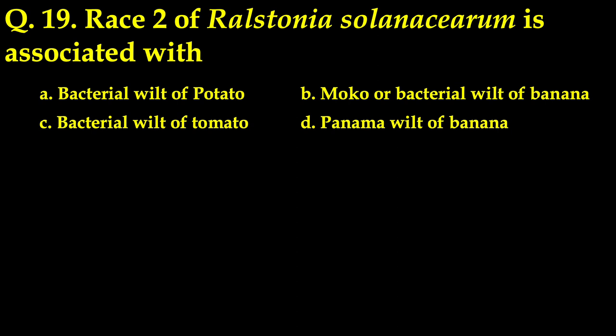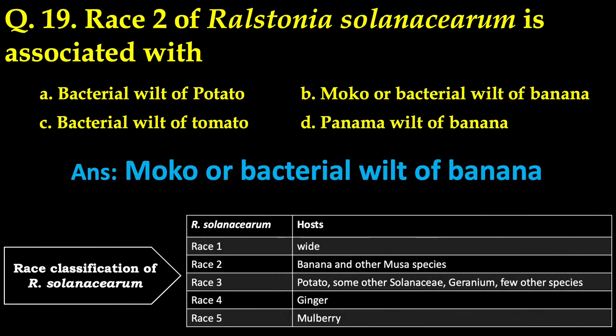Ralstonia solanacearum race — which race is associated with what? There were four options: bacterial wilt of potato, moko or bacterial wilt of banana, bacterial wilt of tomato, and Panama wilt of banana. The correct answer is moko or bacterial wilt of banana. A table shows the race classification: Race 1 has a wide host range; Race 2 is mostly confined to banana and Musa species; Race 3 affects potato and some Solanaceae; Race 4 is confined to ginger; Race 5 is confined to mulberry.